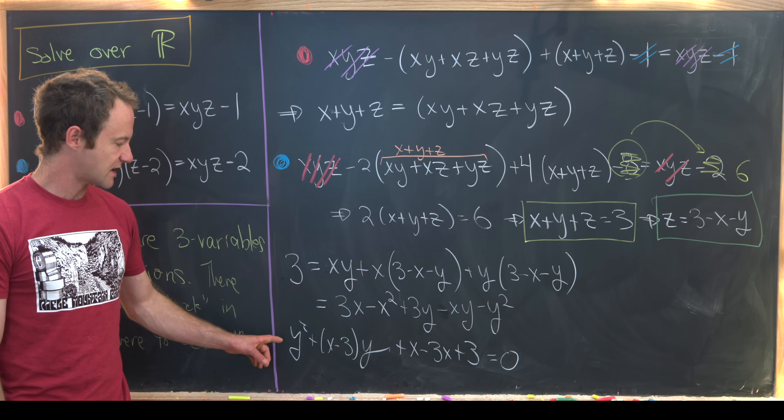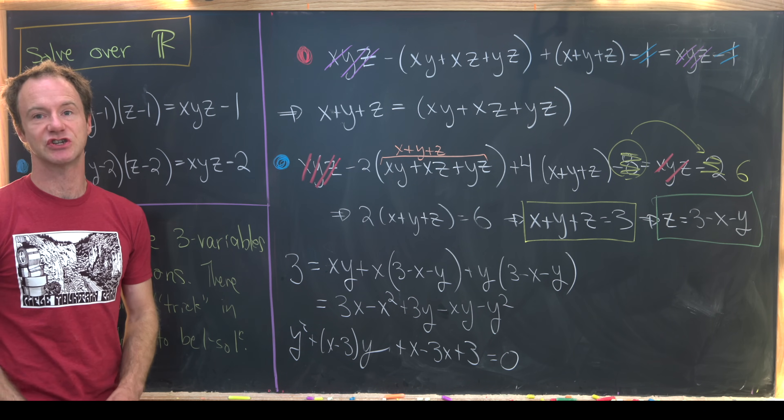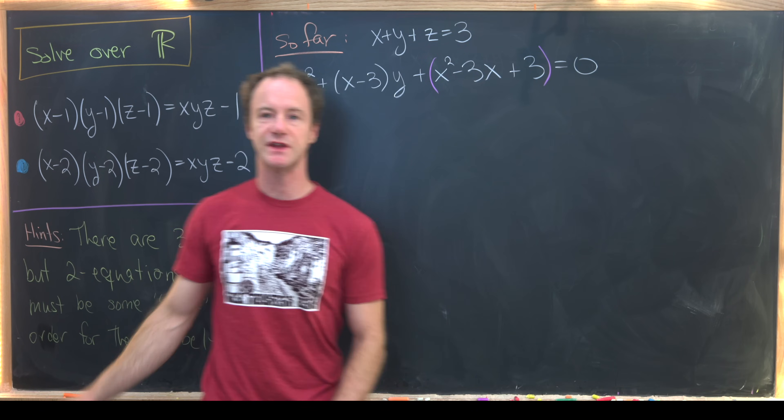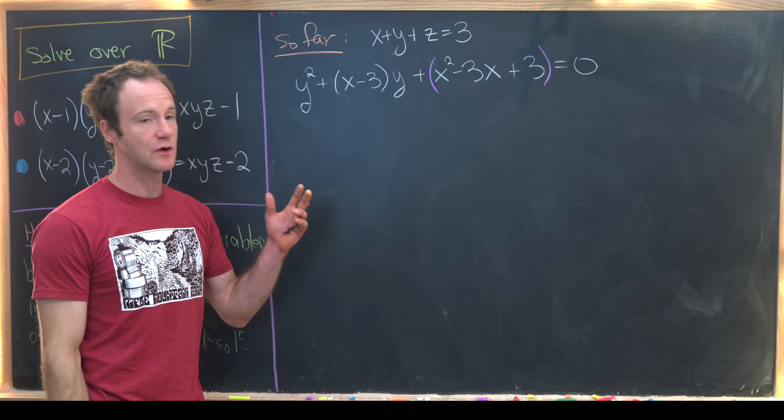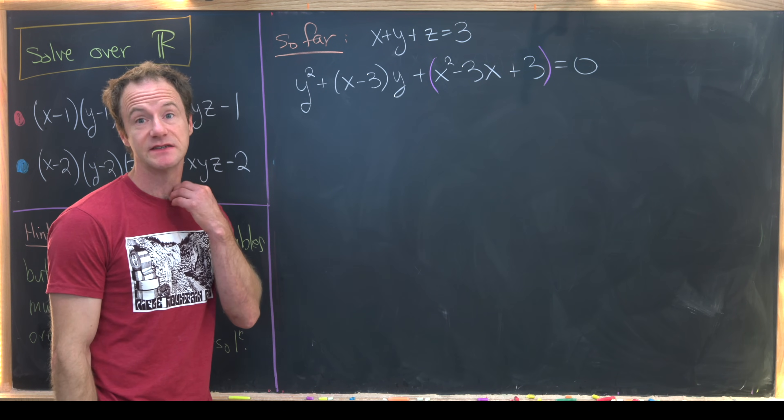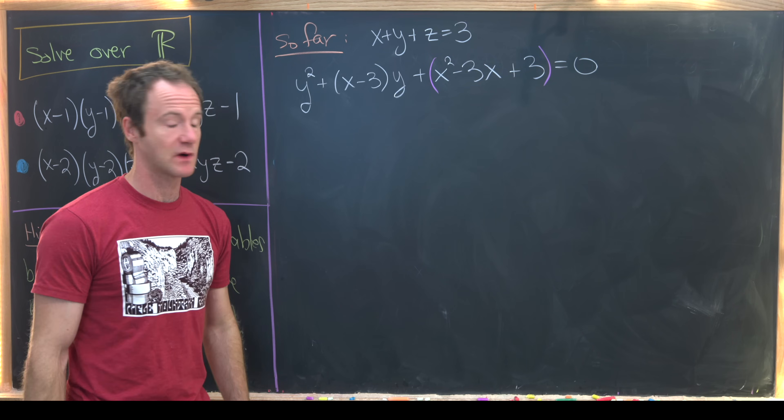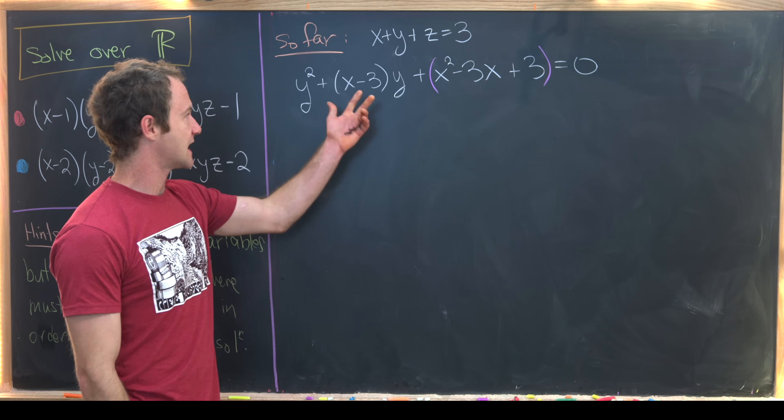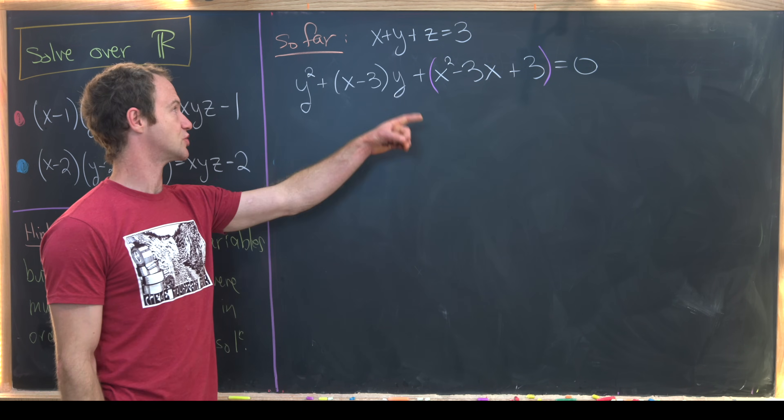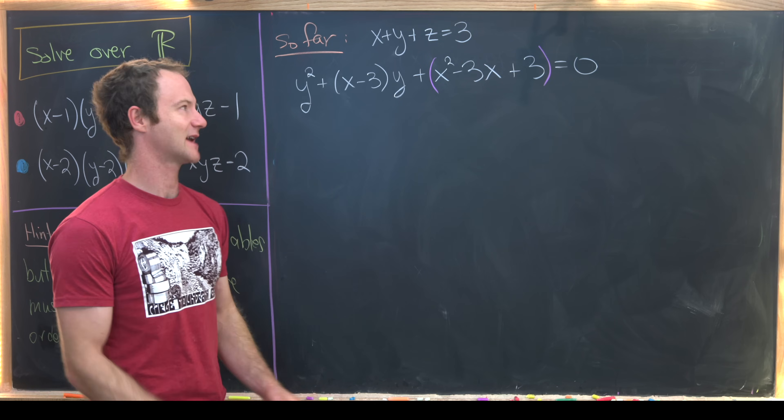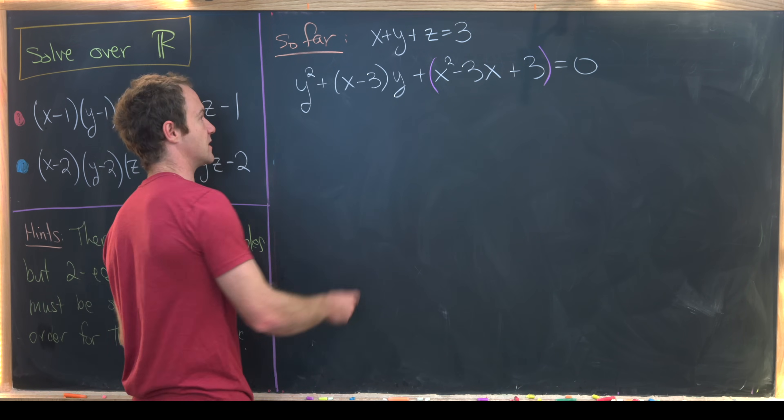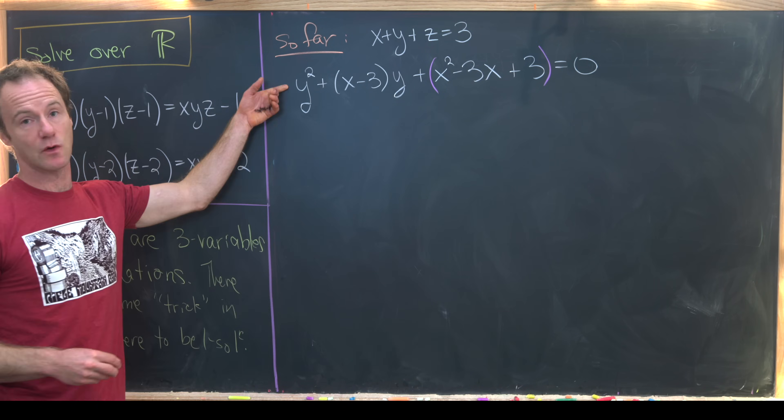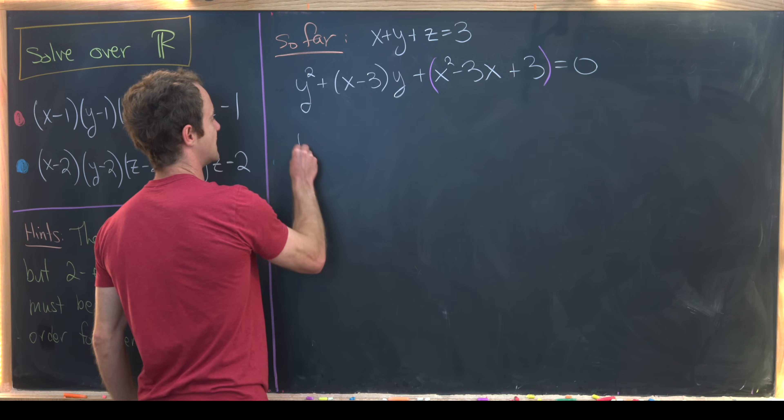Let's bring this data to the top and then we can start finishing it off. On the last board, we used our information to gain the following two equations relating x, y, and z. First, we have x + y + z = 3. Next, we have this quadratic equation where we are viewing y as the variable and x part of the coefficients.